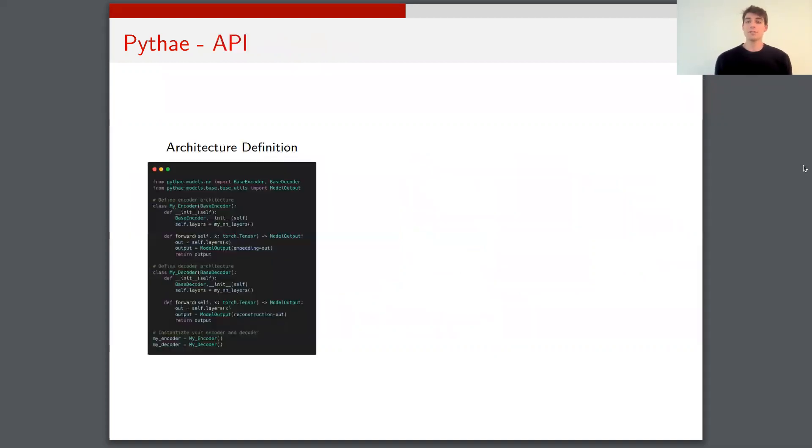So now let's have a look at the API of the code. So let's say that I want to train a variational autoencoder with Pythae on my own data. So the first thing that I need to do is to define my architecture. So it can be done pretty easily using the base encoder and base decoder class. So I import them and I create two other classes, my encoder and my decoder, where basically I specify my neural network architecture.